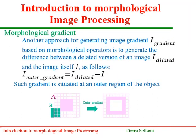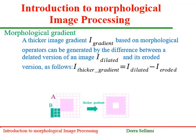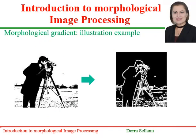Another approach of generating image gradient based on morphological operators is to generate the difference between a dilated version of an image and the image itself. Such a gradient is situated at an outer region of the object, with size of one pixel. As we can see, the bounds of the square are drawn. A thicker image gradient based on morphological operators can be generated by the difference between a dilated version of an image and its eroded version. We compute this gradient and notice that its thickness is of two pixels for a structuring element of three by three, so that it puts contours of the image better in relief. Here is an illustration of the morphological gradient on the cameraman image. All boundaries in the image are emphasized, even those corresponding to noisy pixels.